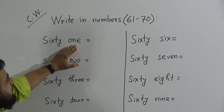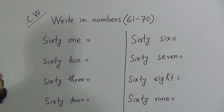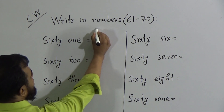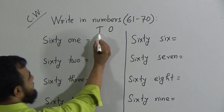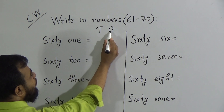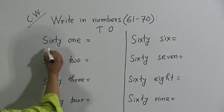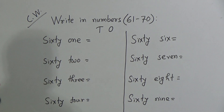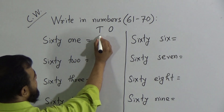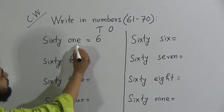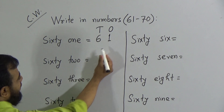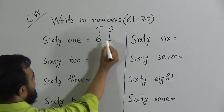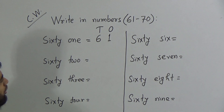The first number is 61. To write down 61, this is a two-digit number, so we should indicate the place value: T means tens and O means ones. To write down 61, we write 6 in the tens place and 1 in the ones place. This makes 61. We say: six tens and one one makes the number 61.